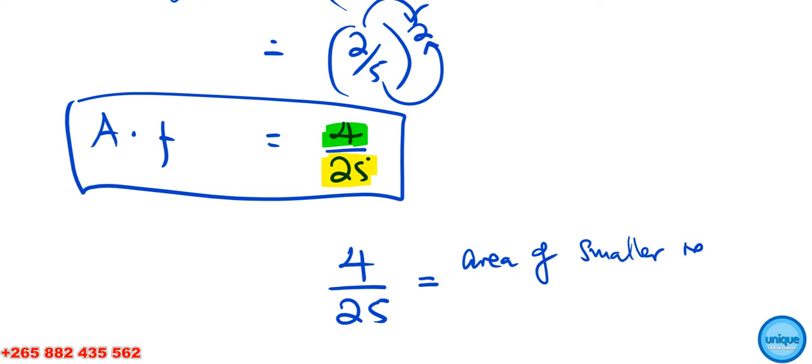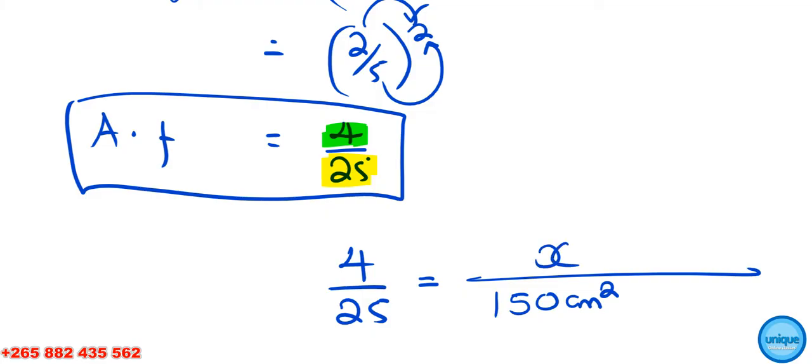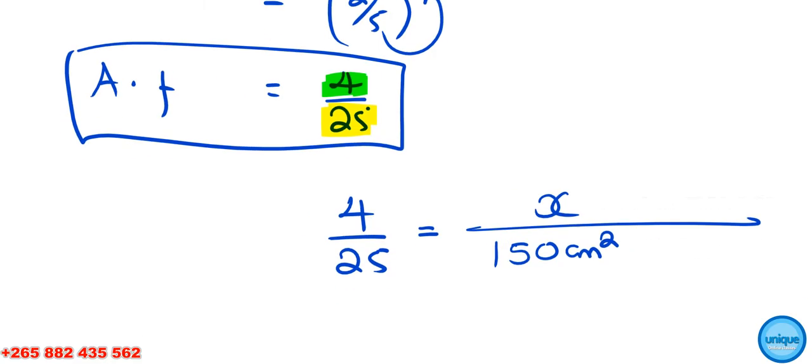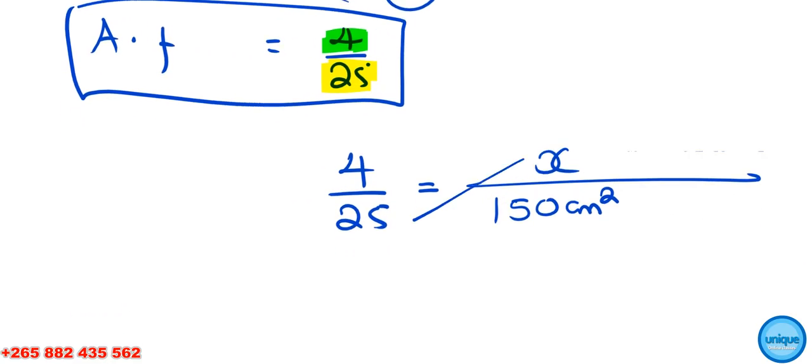The area of the bigger rectangle is 150 centimeter square. We can label the unknown area as x, representing the area of the smaller rectangle. If you cross multiply, we get 25x equals 4 times 150, which equals 600 centimeter square.